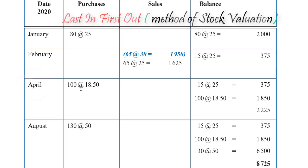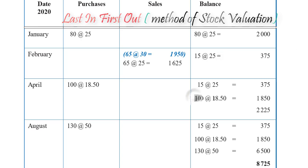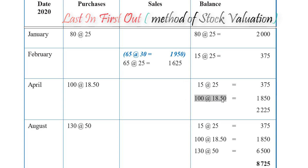In April, we bought an additional 100 units at $18.50. So now our balance would consist of our previous balance of 15 units at $25 and a new set of items we acquired, which is the 100 at $18.50.